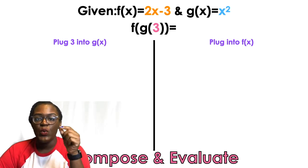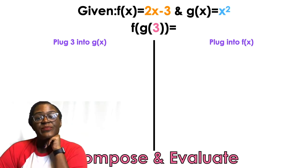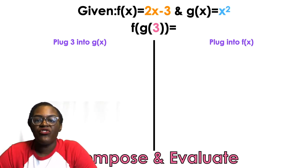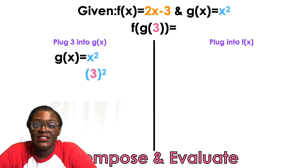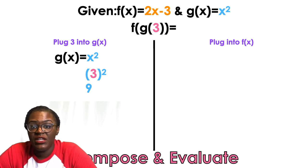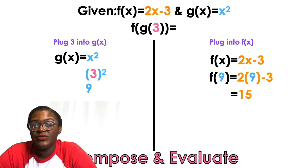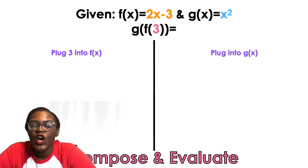New functions: F(x) = 2x minus 3 and G(x) = x squared. We're going to do F of G of 3. First, plug 3 into G: 3 squared is 9. Now plug that 9 into F: 2 times 9 minus 3, which is 18 minus 3, which equals 15.